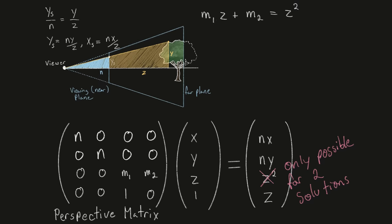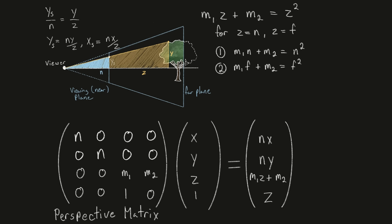Therefore, we will add two constraints that this equation is only true when z equals n or z equals f. This means that the transformation will not change the z values for points on the near and far planes, but all other z values will be warped non-linearly. This results in two equations that we can use to solve for m1 and m2. m1 times n plus m2 equals n squared, and m1 times f plus m2 equals f squared. Solving these equations we get m1 is equal to f plus n, and m2 is equal to negative f times n. Let's plug this in and the solution z component becomes f plus n times z minus fn.